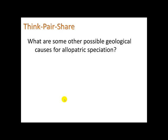What are some other possible geological causes for allopatric speciation? Think of any other reasons why a population may be split into two populations in different regions who could then evolve independently. Take a moment to think about this and pause the video.